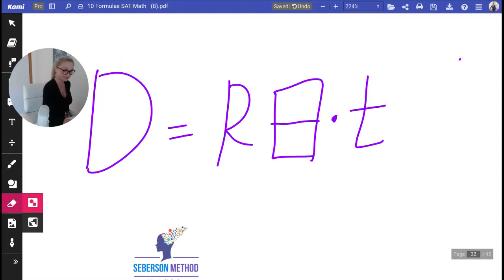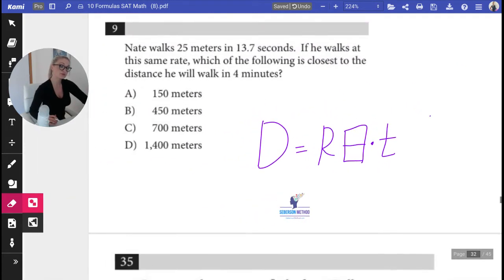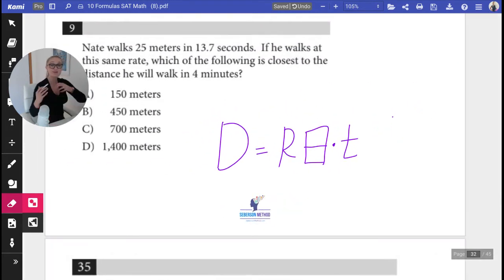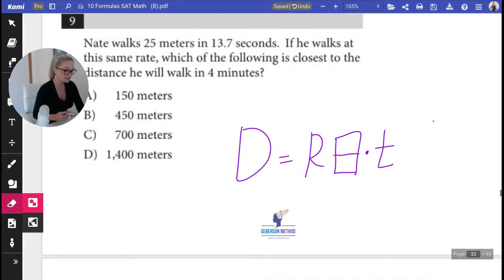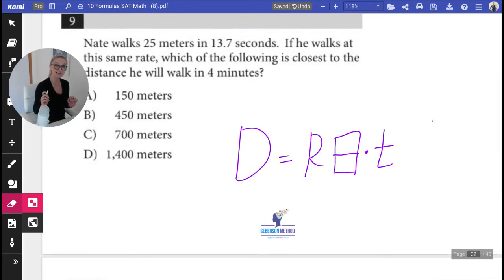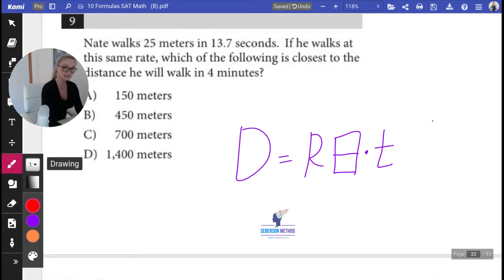In this word problem, you were given three values, and those three values allowed you to come up with a rate. Nate walks 25 meters in 13.7 seconds. Guess what? This information is sufficient for you to actually come up with Nate's rate.